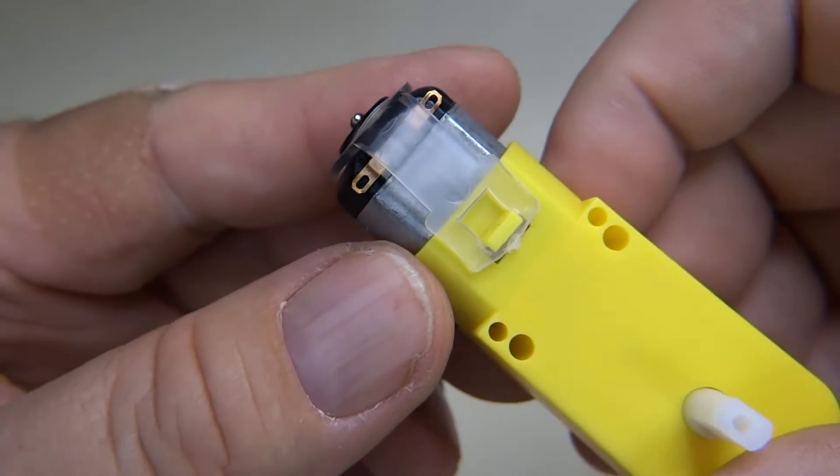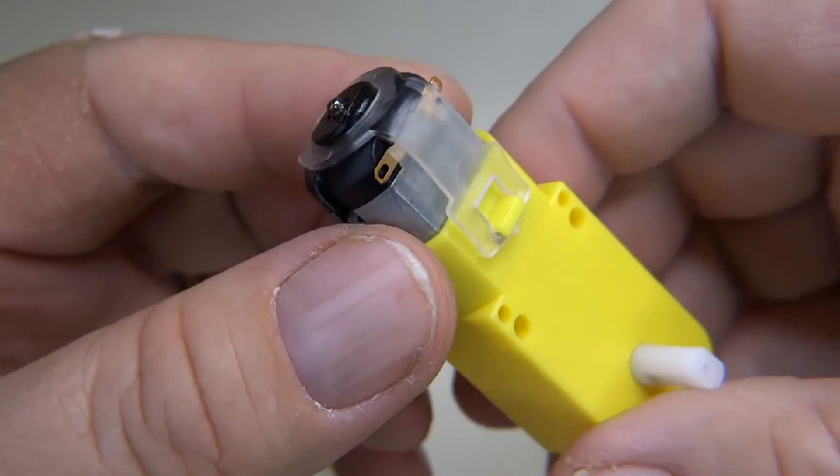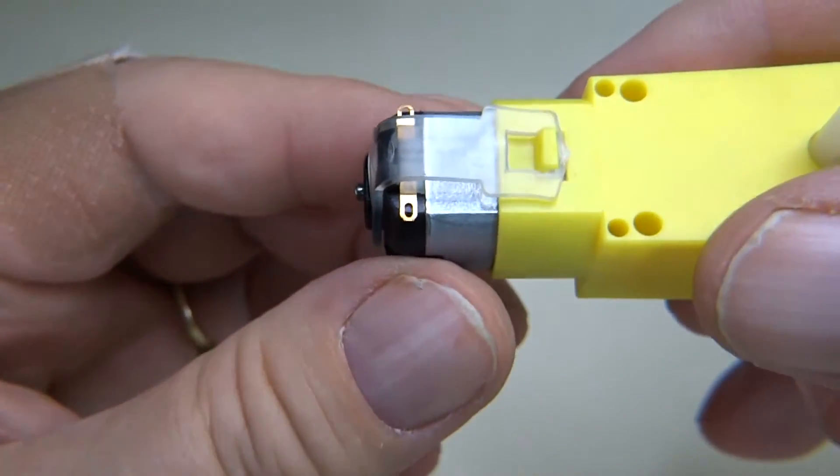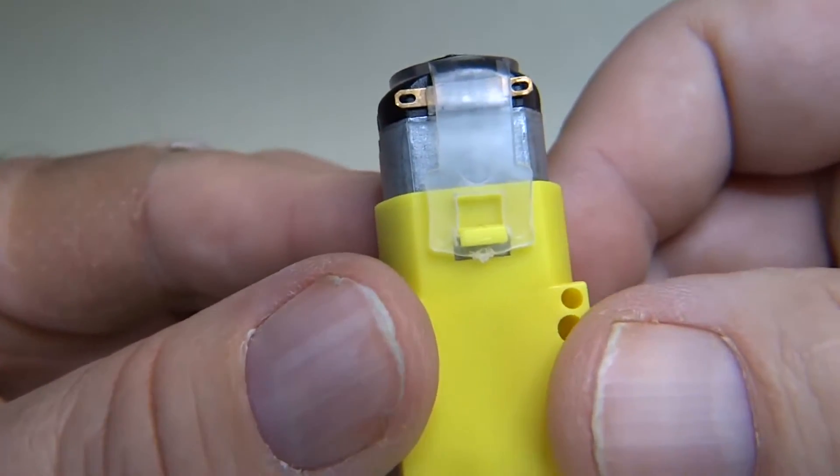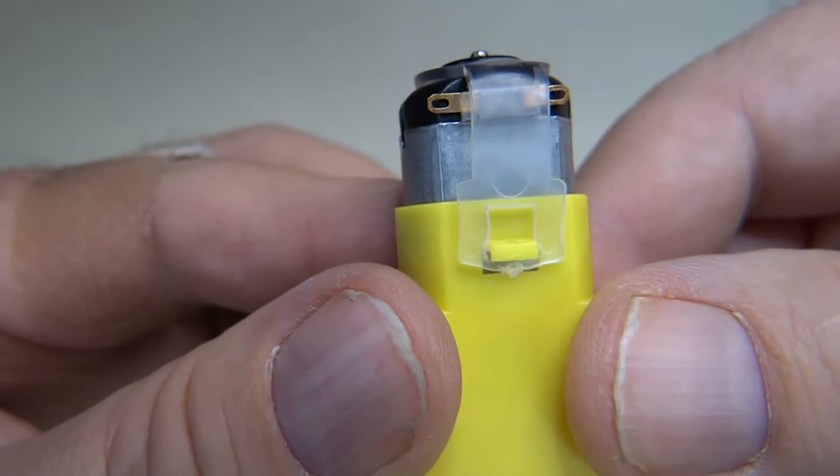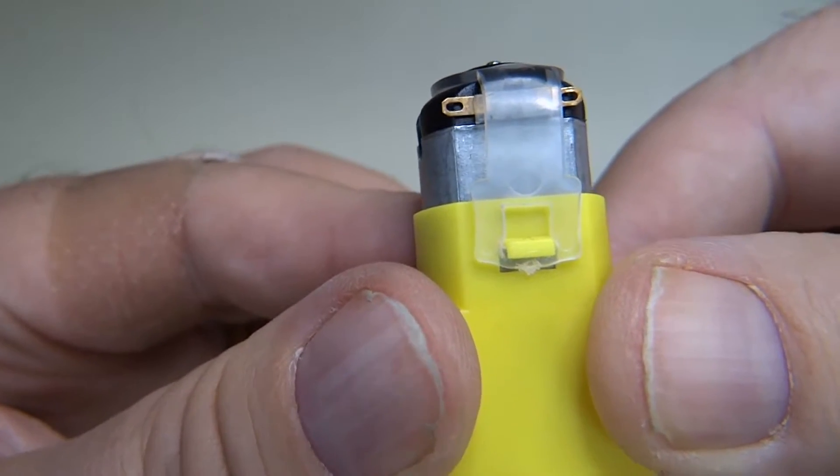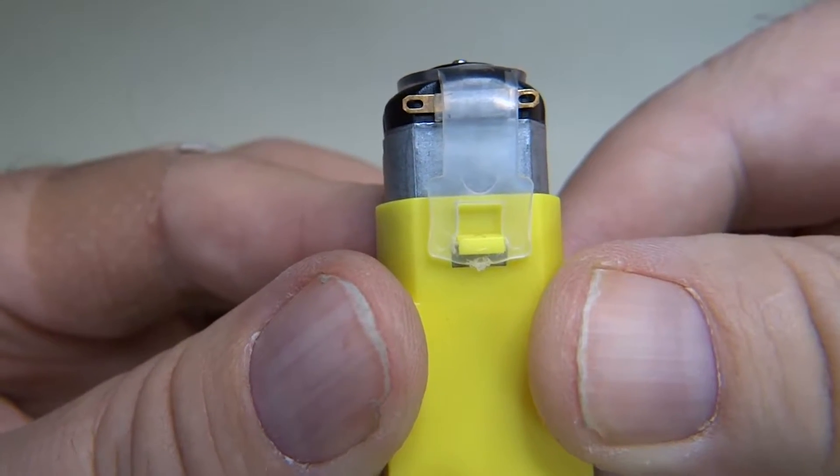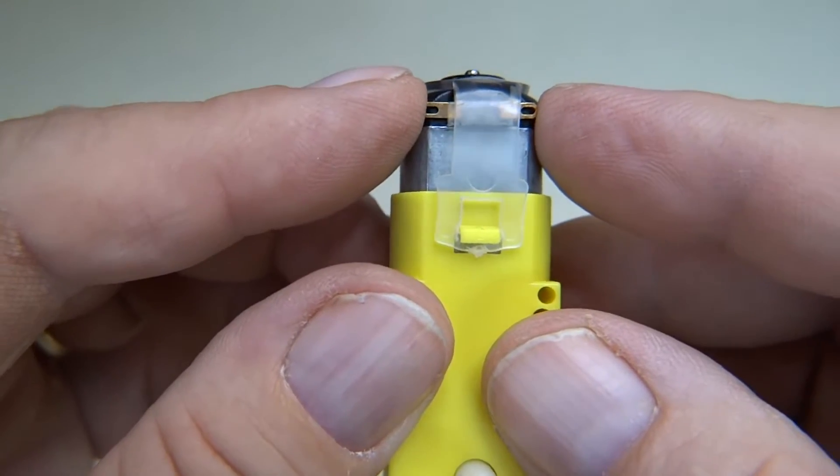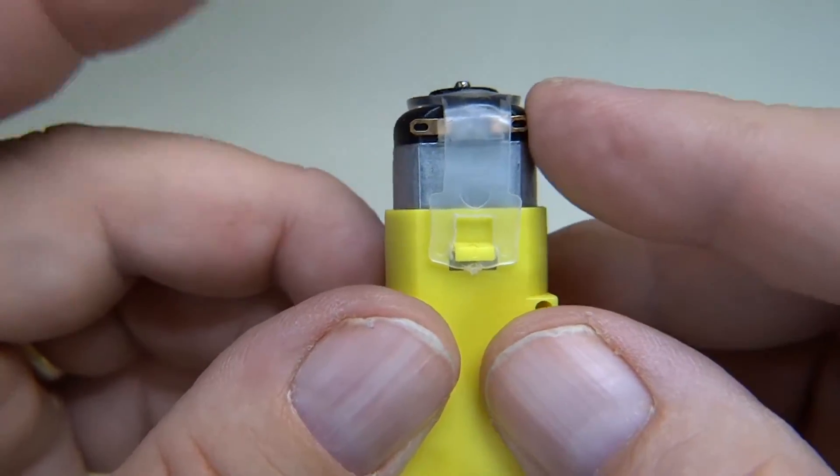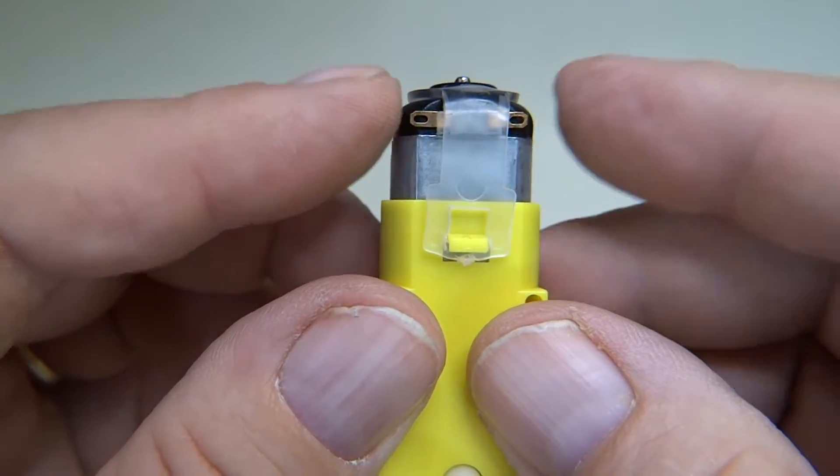Here's the motor, and you can see the two terminals where the power comes in. Now they're not marked with polarity because you can switch polarity. When you have polarity like plus and minus, the motor shaft will turn one direction. If you reverse plus and minus, the motor shaft will turn the other direction.